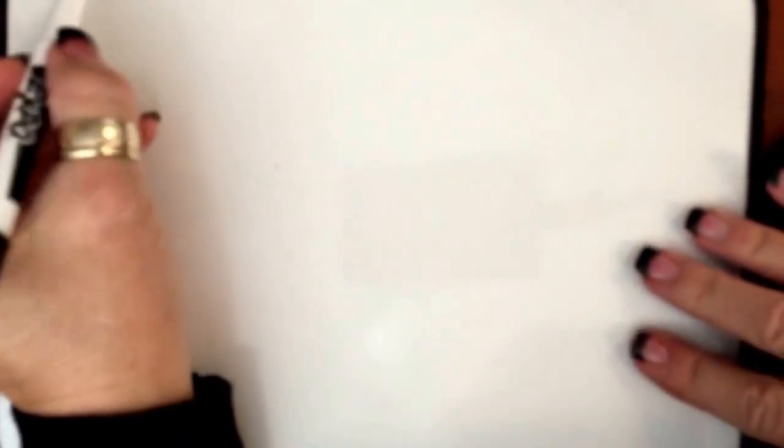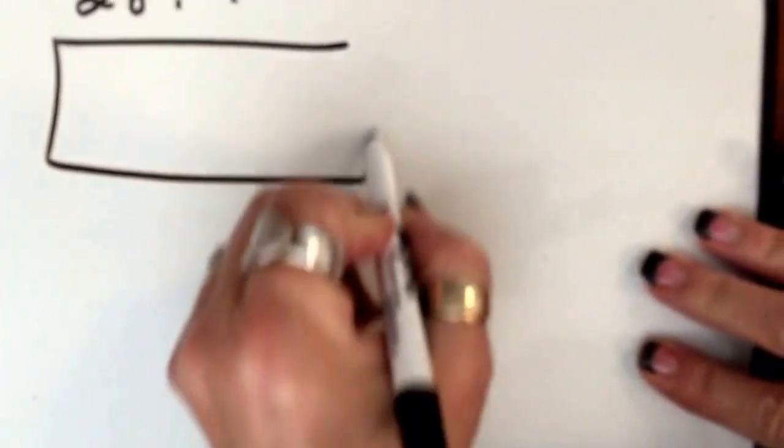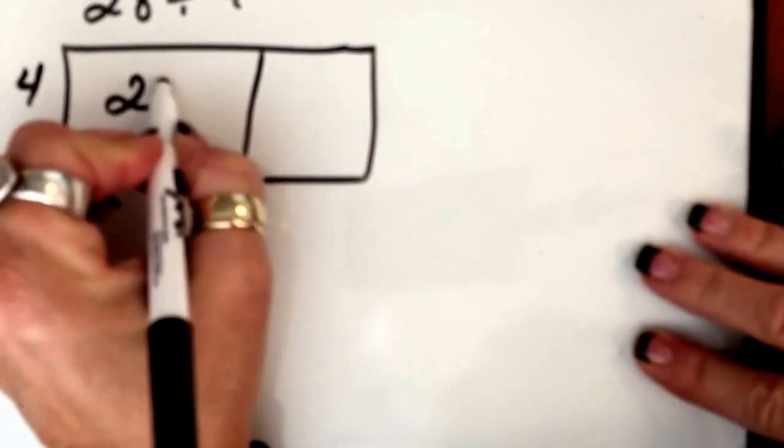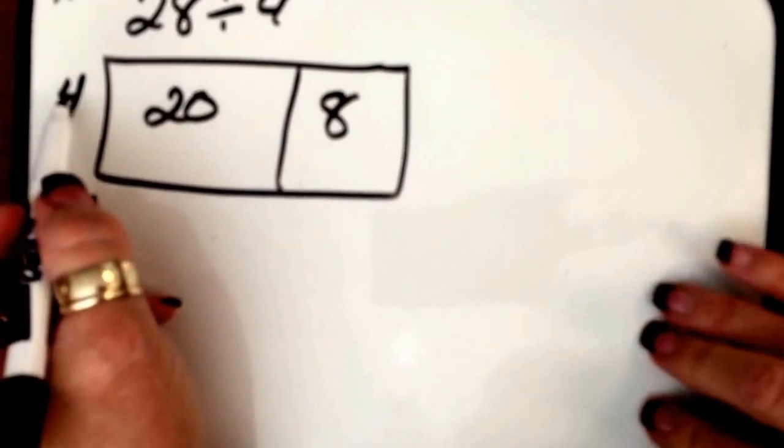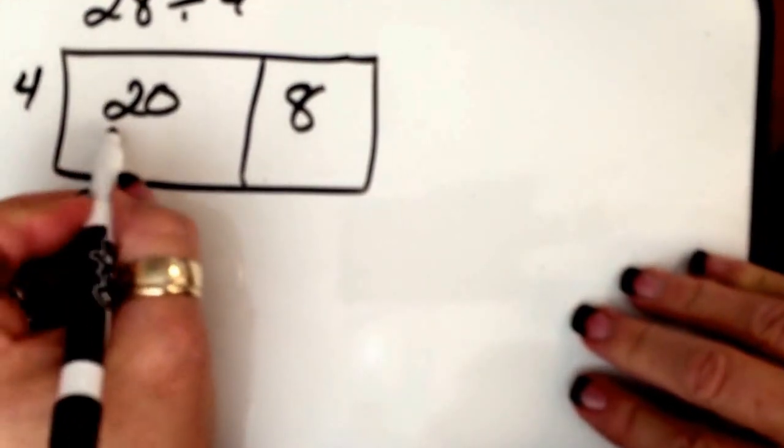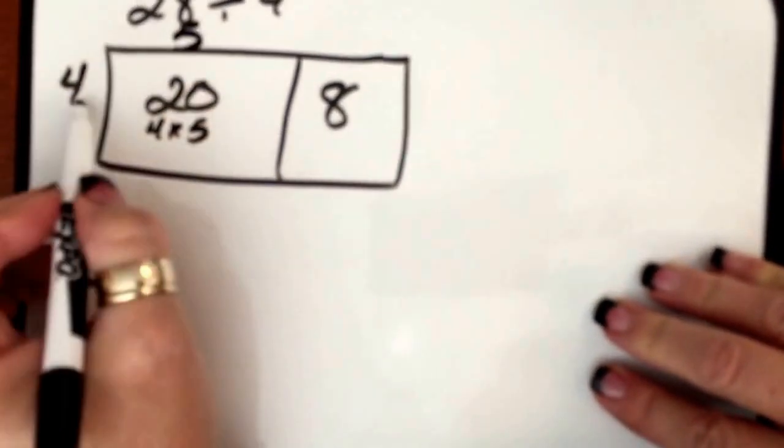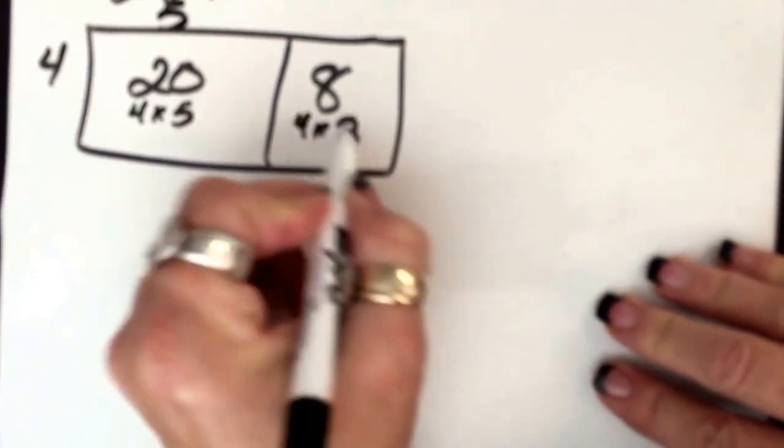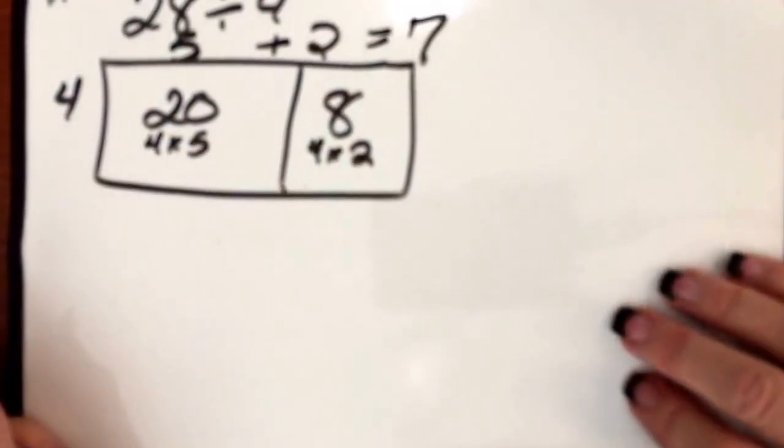Here's the next one, 28 divided by 4. So we're dividing by 4, and we're dividing 28. So then we have to think about it. How many times will 4 go into 20? So that means 4 times 5. So this has to be 5. And how many times will 4 go into 8? That's 4 times 2, so this has to be 2. So 5 plus 2 is 7. So the answer is 7.